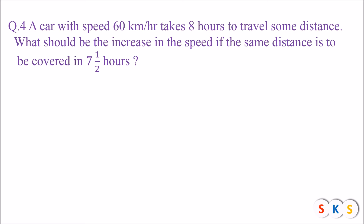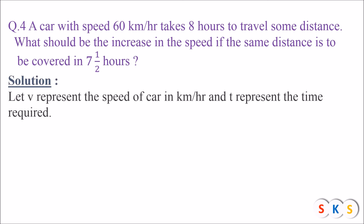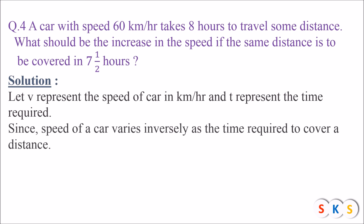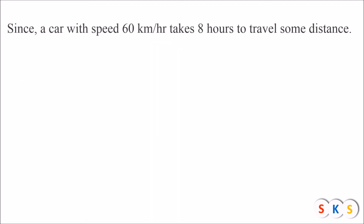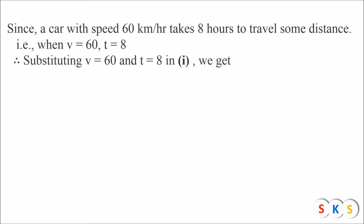Let v represent the speed of the car and t represent the time required. There is an inverse variation between speed and time, so v is inversely proportional to t. The rule says the product is constant: v × t = k. Since the car with speed 60 km/h takes 8 hours, v = 60 and t = 8. Substituting in equation 1: 60 × 8 = k, so k = 480.